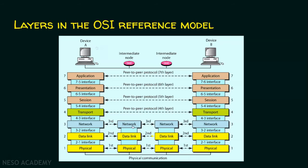We don't want the application data to be accessed by the routers. If someone does that, they are an attacker. So always remember, the intermediary node will focus only on the physical layer, data link layer, and network layer.